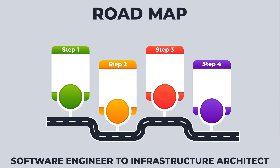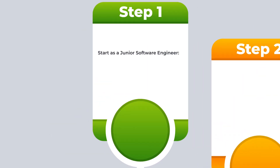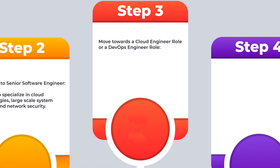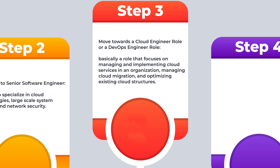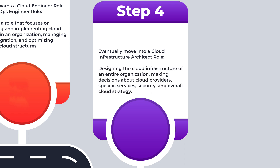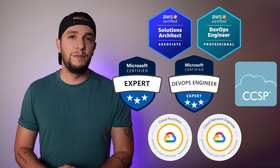To go from a software engineer to Infrastructure Architect, you can follow this suggested path. You start as a junior software engineer — initial focus on coding, debugging, and gaining a solid foundation in software development. Then you progress to senior software engineer to begin specializing in cloud technologies, large-scale system designs, and network security. After that, you move towards a cloud engineering or DevOps engineer role, managing and implementing cloud services, cloud migrations, and optimizing existing cloud structures. Eventually you move into the Cloud Infrastructure Architect role, designing the cloud infrastructure of an entire organization and making decisions about cloud providers, specific services, security, and overall cloud strategy. Certifications can significantly enhance your journey and improve your marketability.